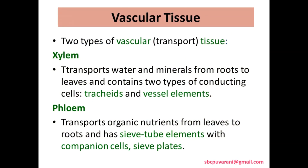Vascular tissues are of two types. One is xylem and another one is phloem. Xylem transports the water and minerals from the root to the leaves. Phloem transports the nutrients from the leaves to the roots.